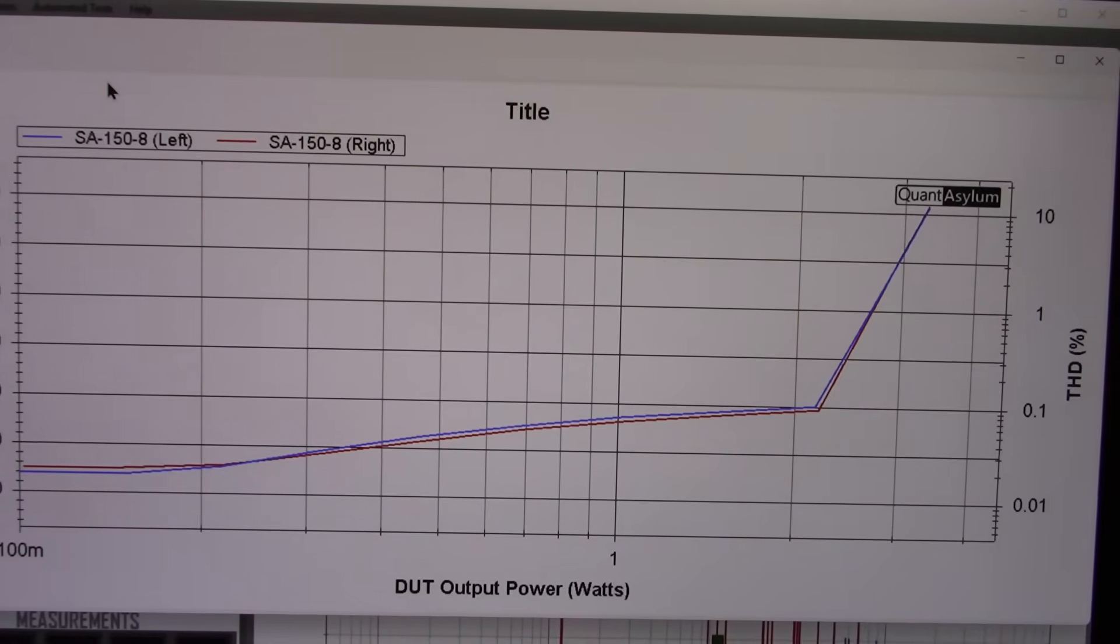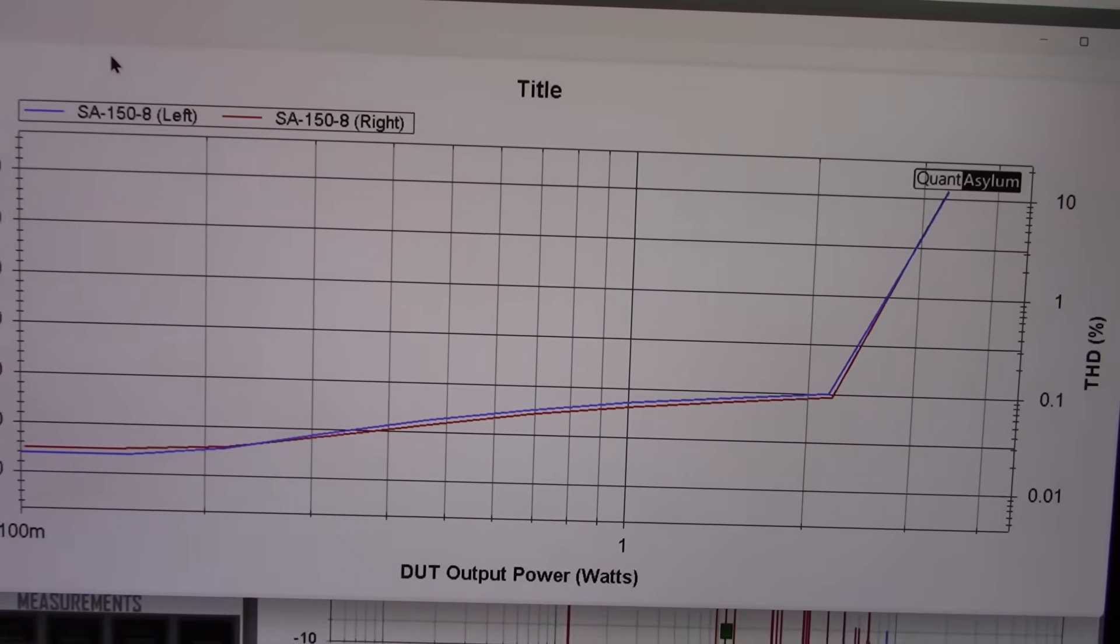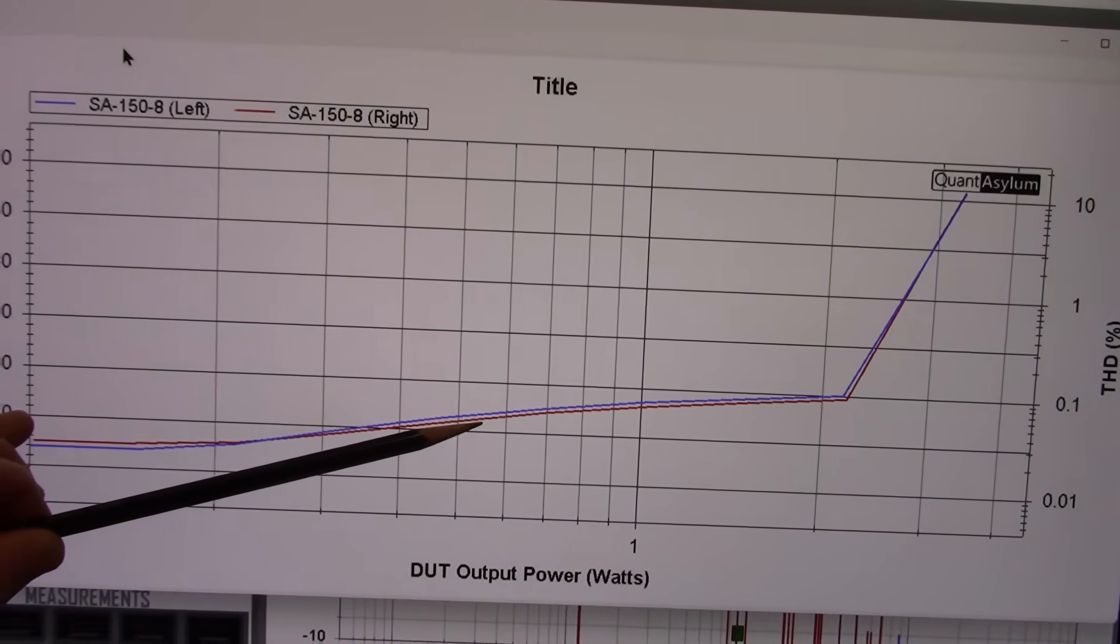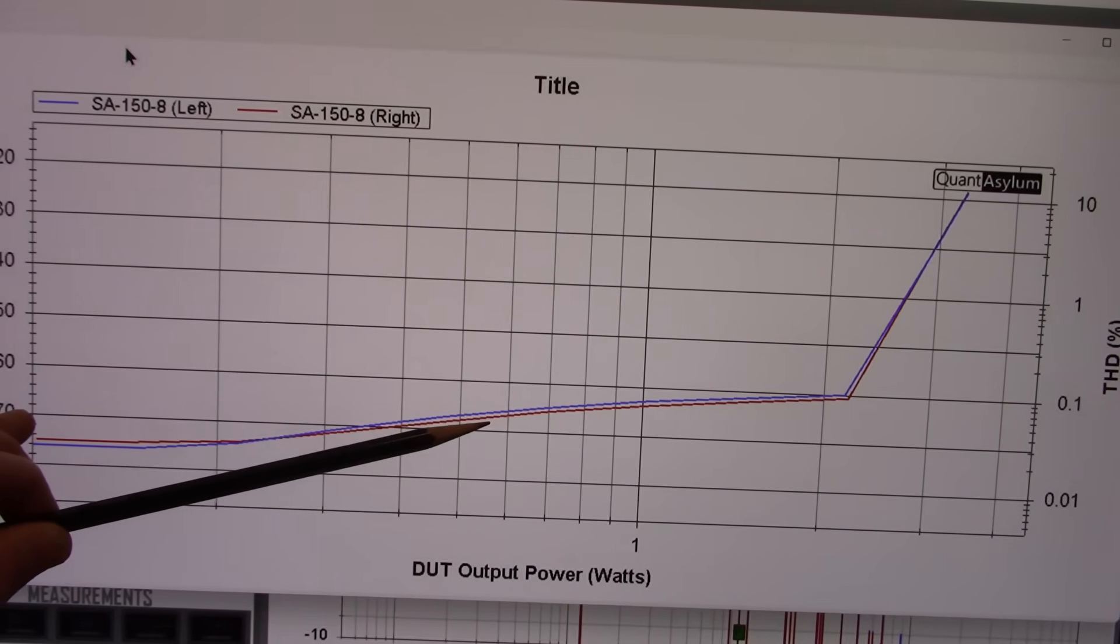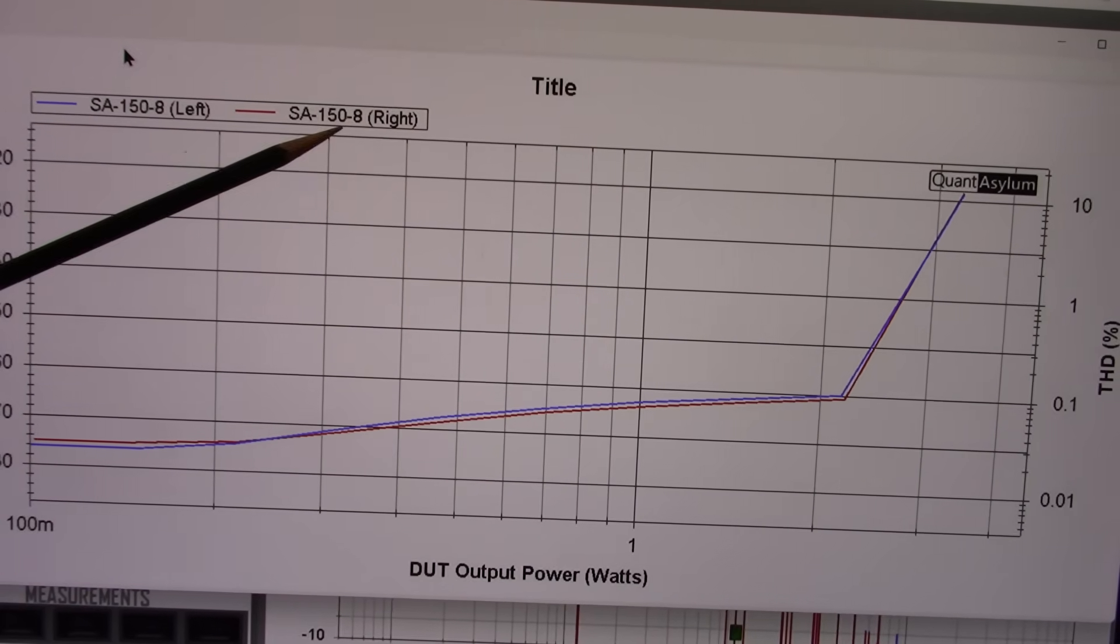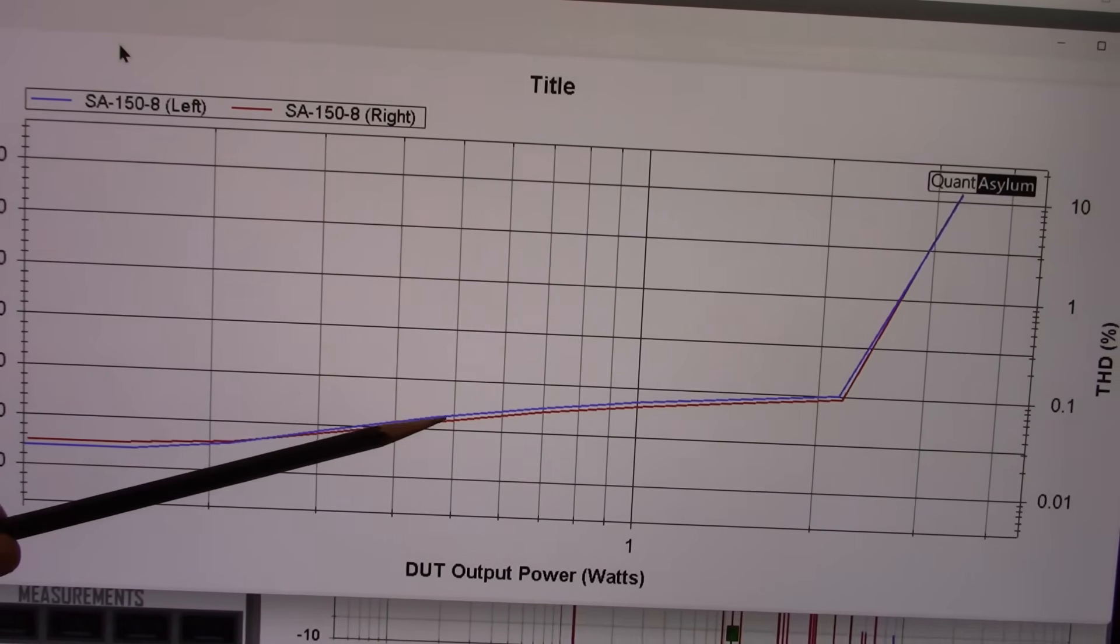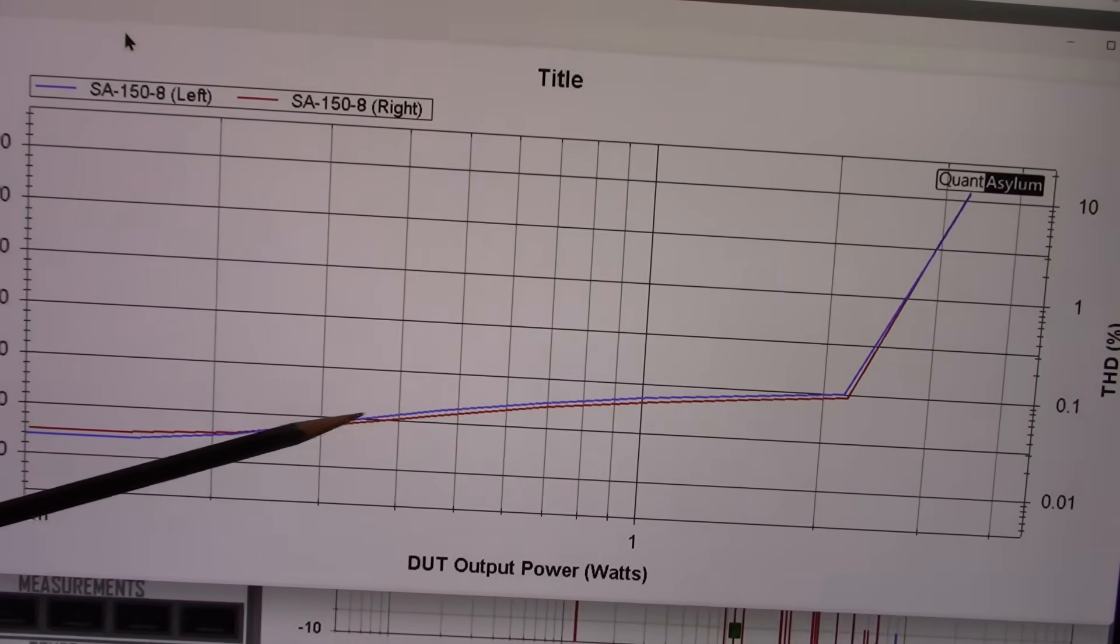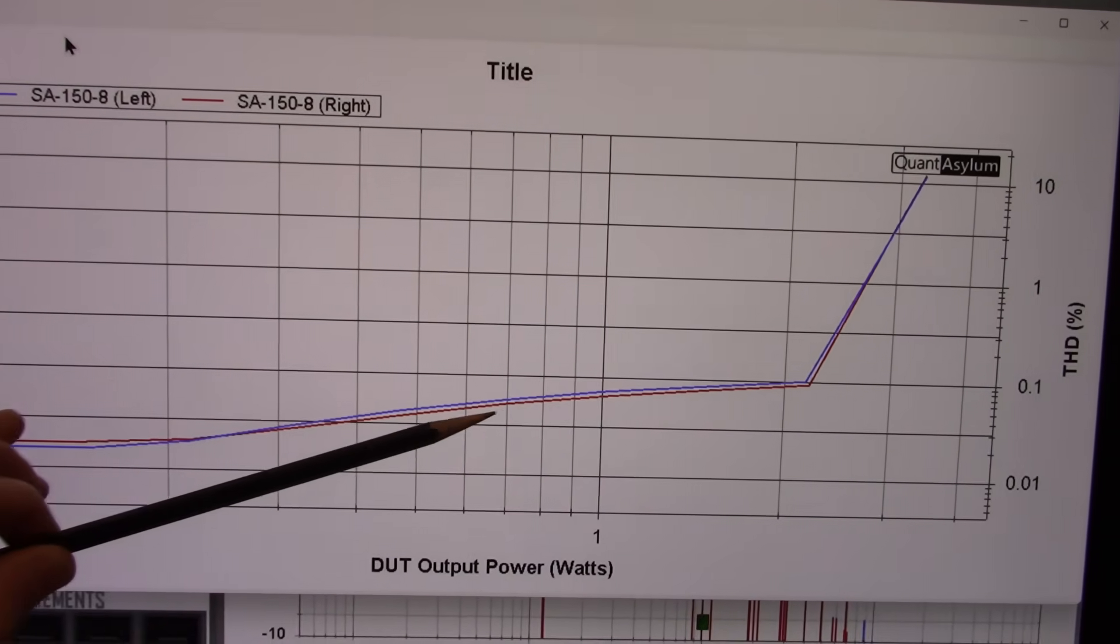Okay, so now I'm measuring the output power versus distortion. And in this case, the right channel is red and left is blue. Normally I use blue for 8 ohm and red for 4 ohm, but in this case I wanted to see both channels make sure they're functioning properly. Because if you have a failing component or a drifting component, you'll start seeing differences here. But they're within tolerance, I would say.